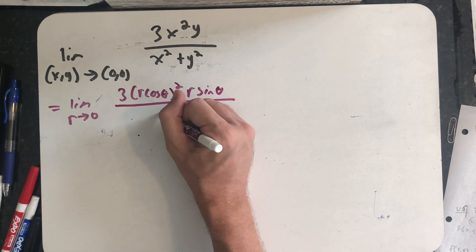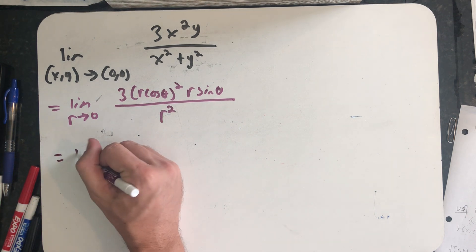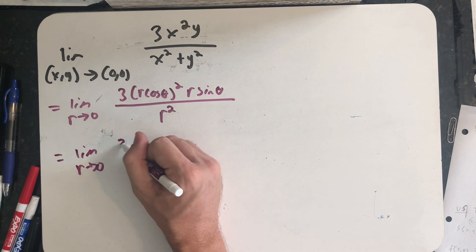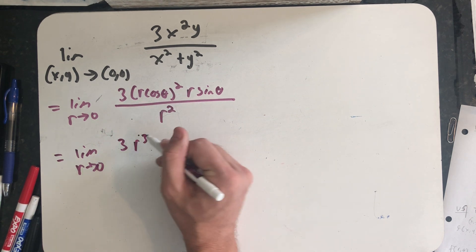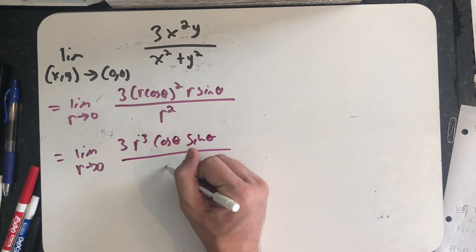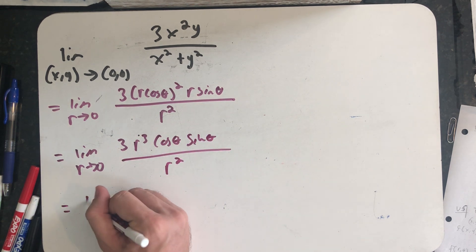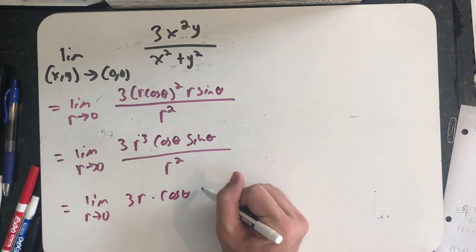So I'm converting my function into polar coordinates, using the fact x is r cosine theta, y is r sine theta, and x² + y² is r². On top, I have 3 times—that's going to be r² times r is r³ cosine theta sine theta all over r². Leaving me with the limit as r approaches zero of 3r times cosine theta sine theta.